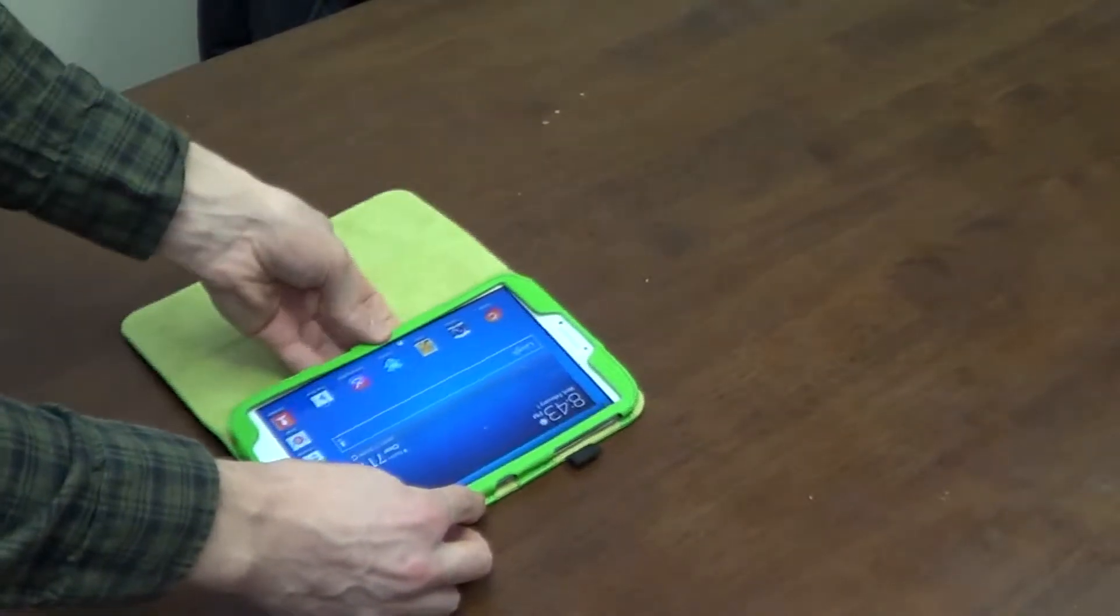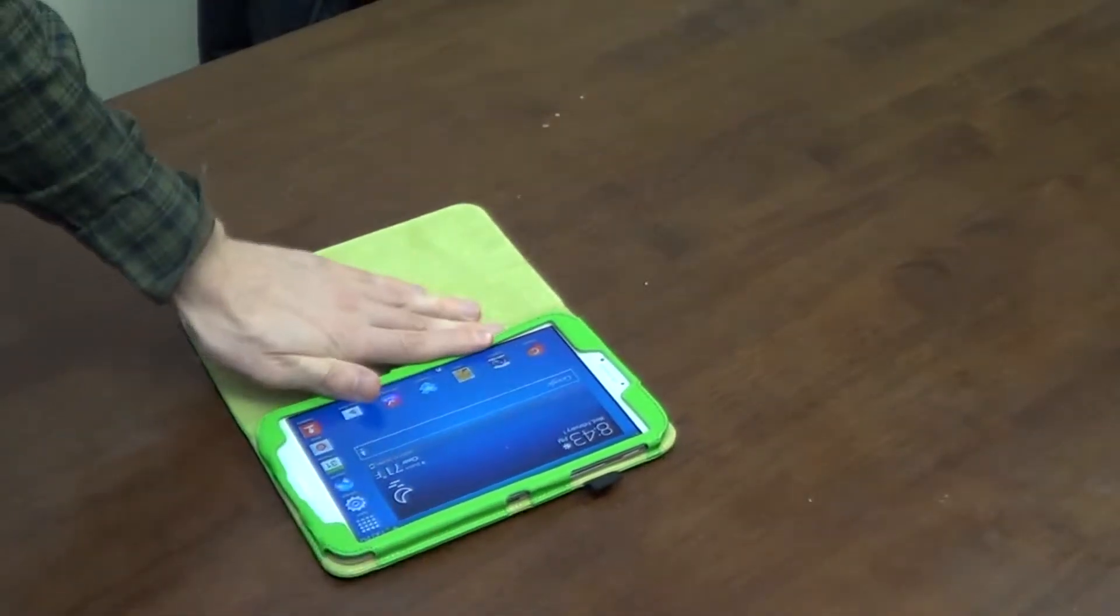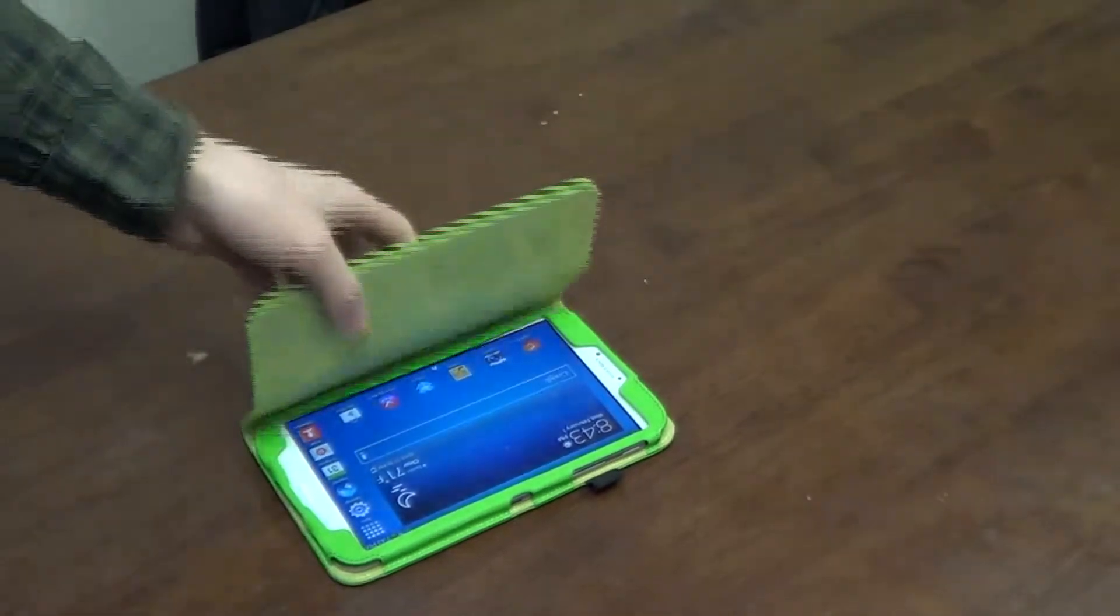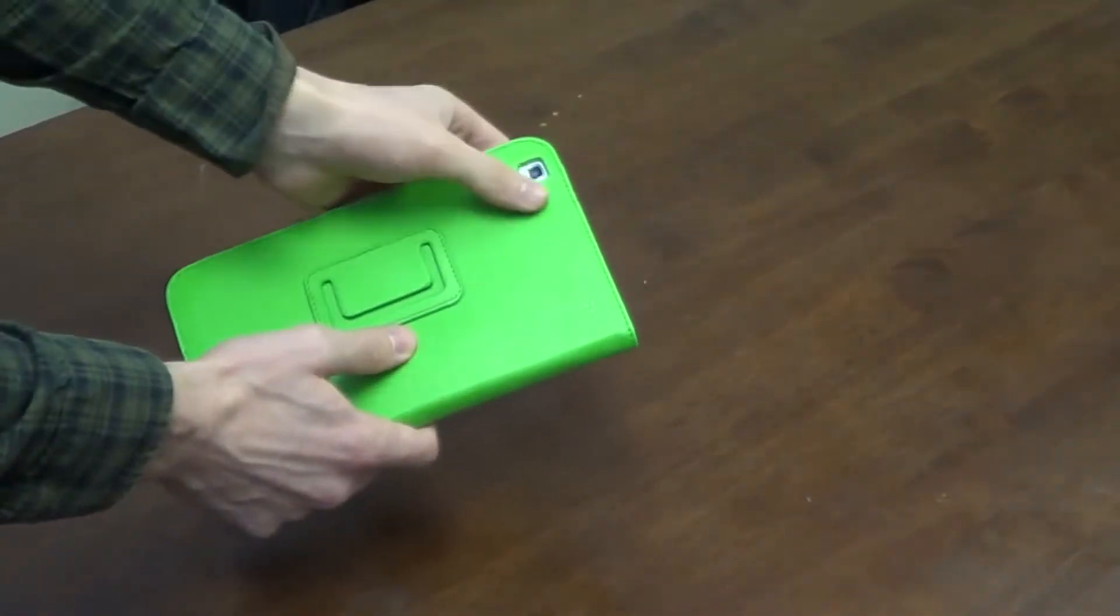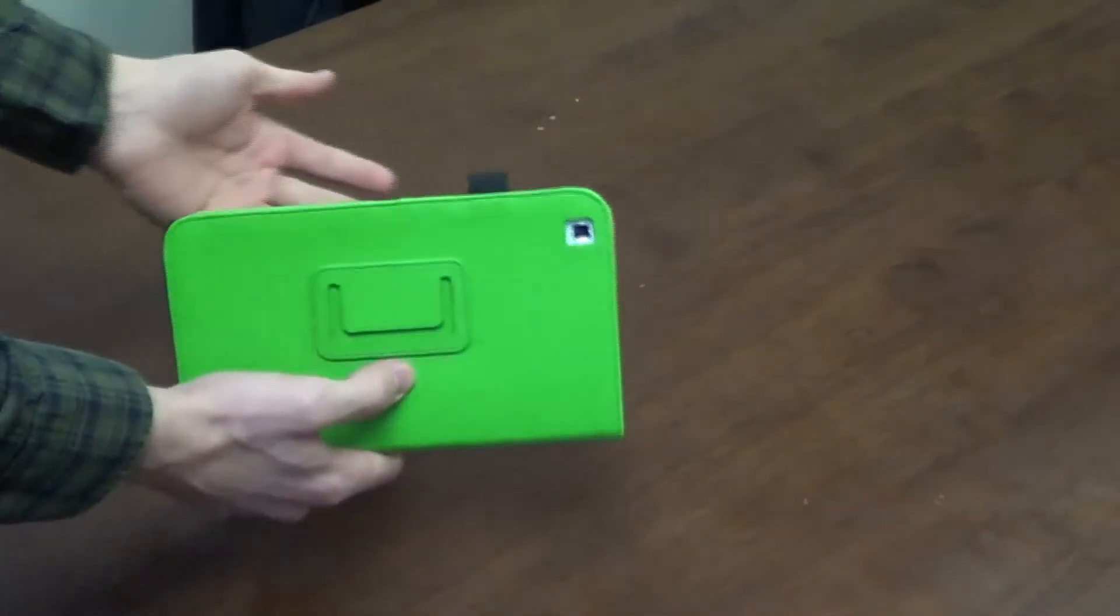Now, I'm going to tuck this flap back in here and apply some light pressure to make sure it sticks. Now, to close the front cover, take a look at the ports. You'll see that you have a cutout here for the camera, of course, so it's not obstructed.